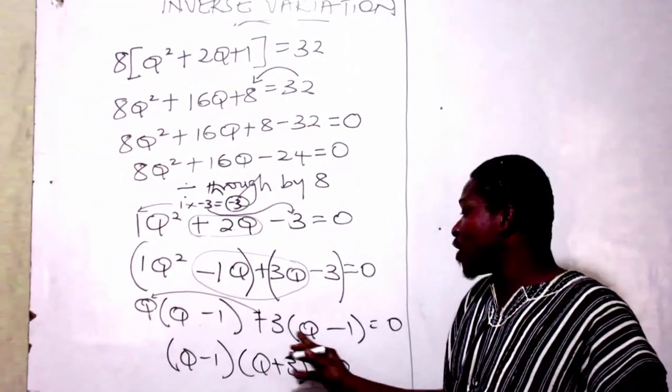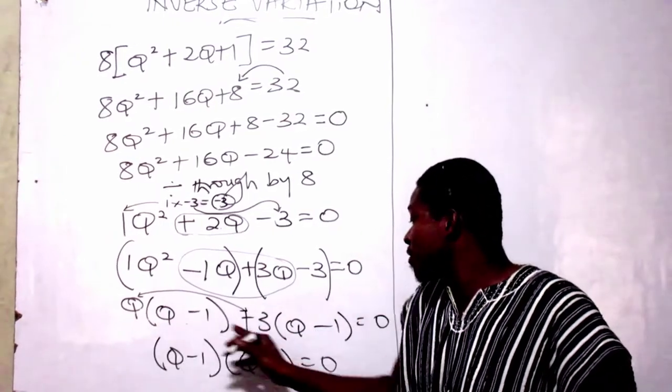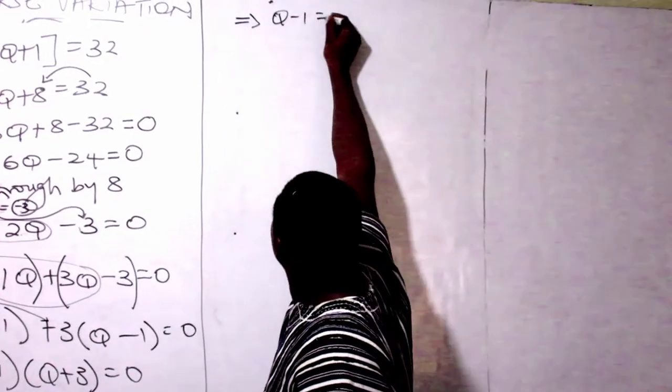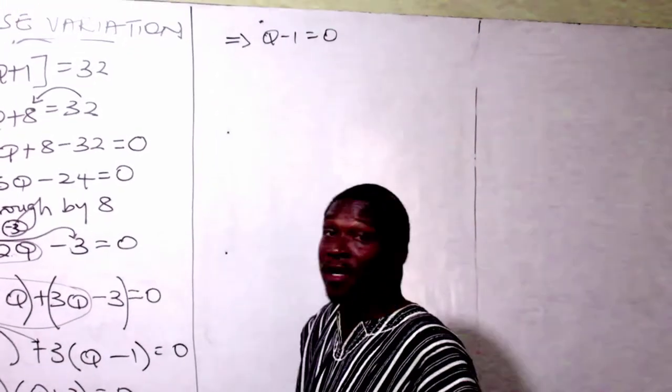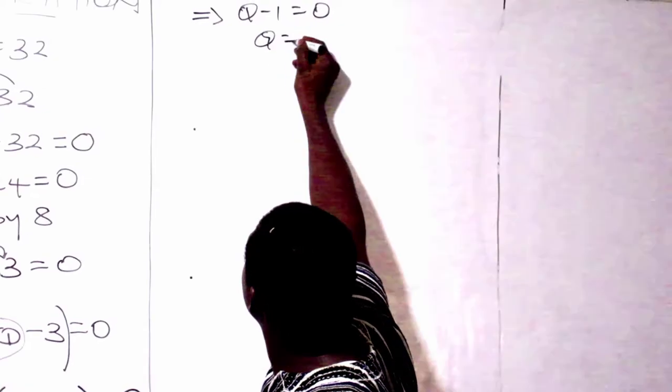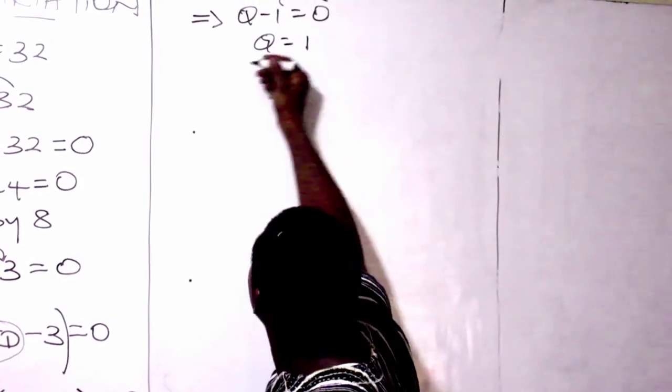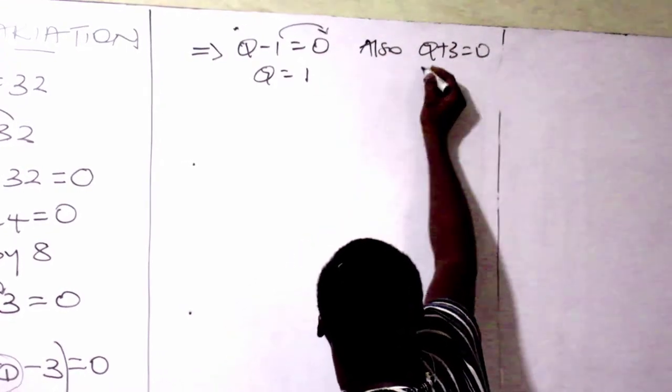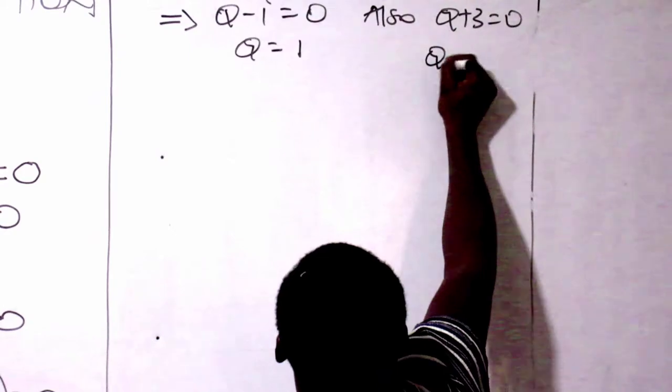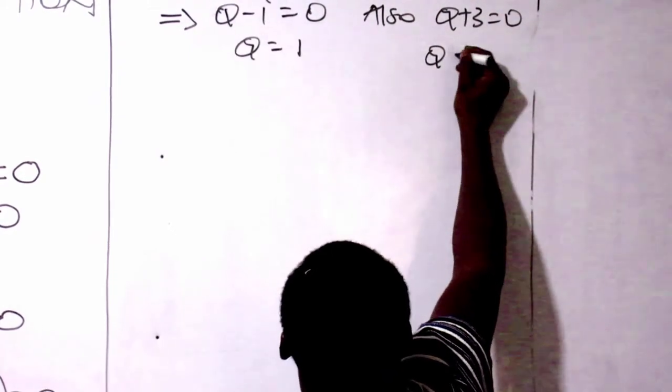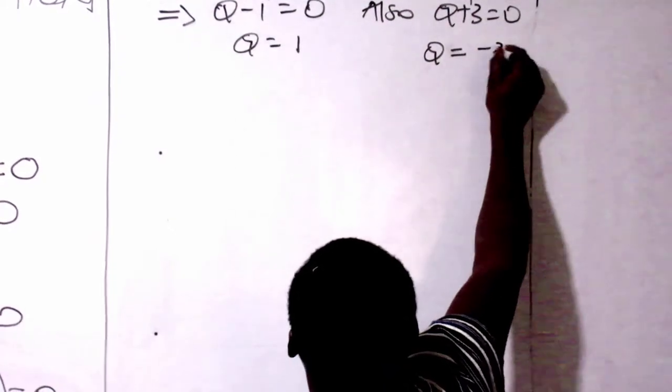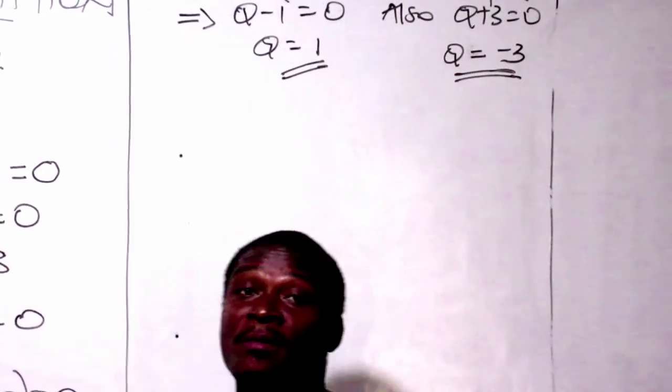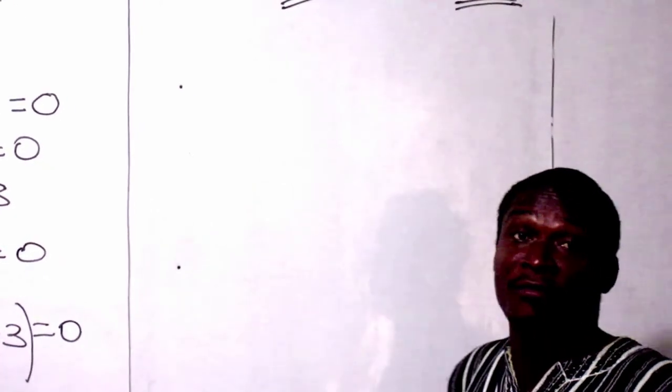So (KL minus 1)(KL plus 3) equals 0. Implication: it means KL minus 1 equals 0. So this positive 1 goes there, you get KL equals 1. Also, KL plus 3 equals 0. This positive 3 goes there, you get minus 3. So the values of KL, we have them to be 1 and negative 3.